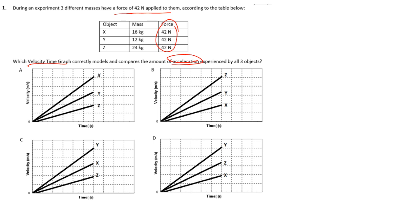So the connection we need to recall here is that on a velocity time graph, slope is the acceleration. That's the big thing here. If we can figure out what the slope is, that models the acceleration.